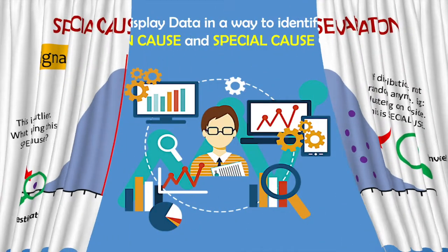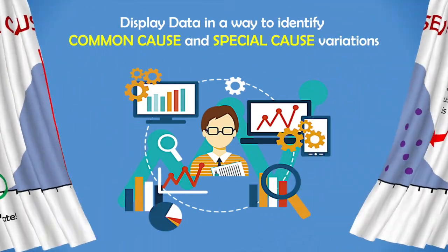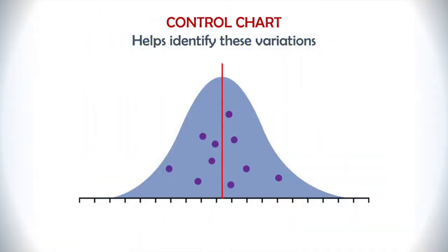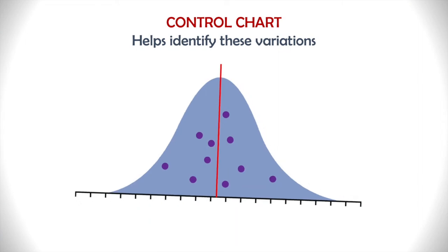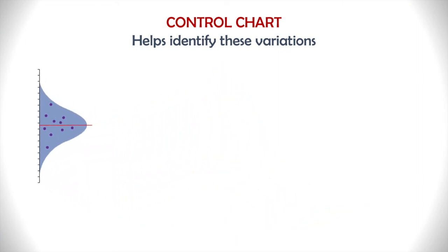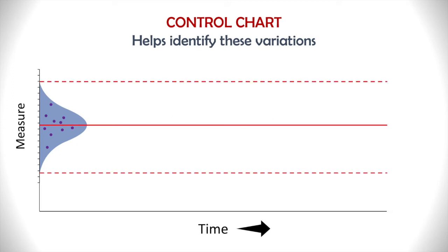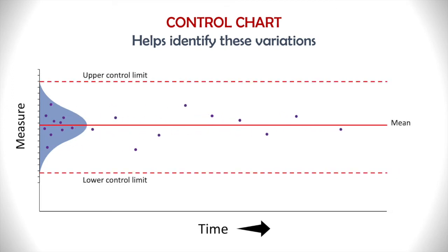When we are looking at data, it is important to display it in a way that we can identify what is common cause and what is special cause variation. Run charts and control charts help us do that. The data is plotted over time, and there are mathematical rules of probability to make it easy to identify special cause visually.